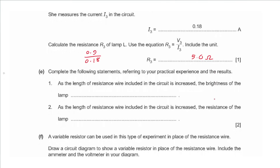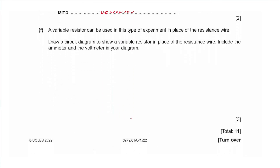Part E says complete the following statements. As the length of resistance wire included in the circuit is increased, the resistance increases, so current decreases and the brightness of the lamp decreases. Also, as the length of wire in the circuit increased through experiments 1, 2, and 3, the resistance R1, R2, R3 also decreased — starting at 7.5, then 5.8, then 5.0.